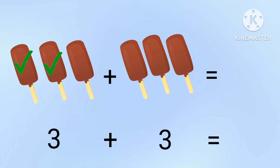2, 3, 4, 5, 6. There are 6 ice creams. So 3 plus 3 equal to 6.